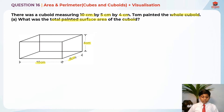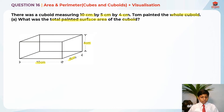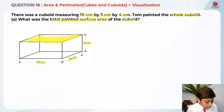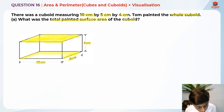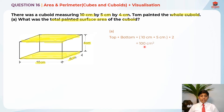Tom painted the whole cuboid, so they are asking us the total painted surface area. If you painted the whole cuboid, it means the whole surface area — the front side, back side, top, bottom, right, and left. First, I'm going to find the top and bottom area. These two sides are equal, so we take 5 cm times 10 cm times 2, which gives us 100 cm².